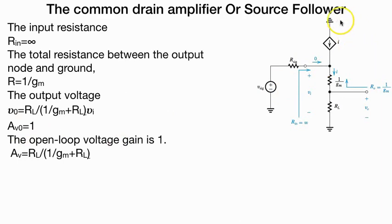In common drain, the representation changes. We have current, we have resistance, we have RL, and the total resistance between output and the ground is 1 over GM. Then the output voltage will become RL and the open loop gain is 1 mostly.